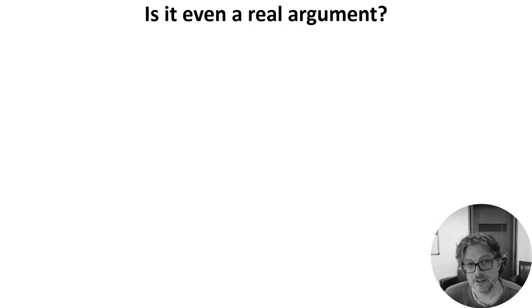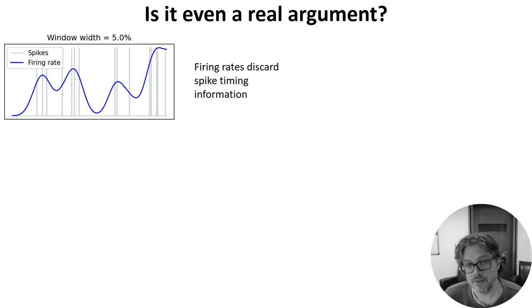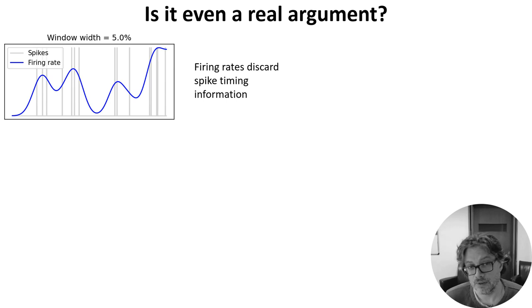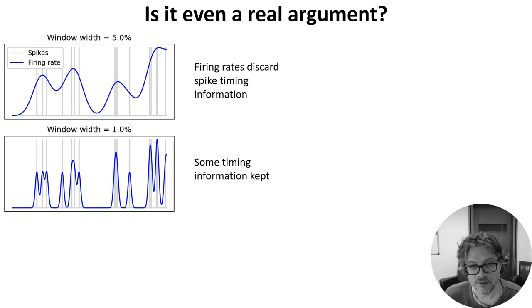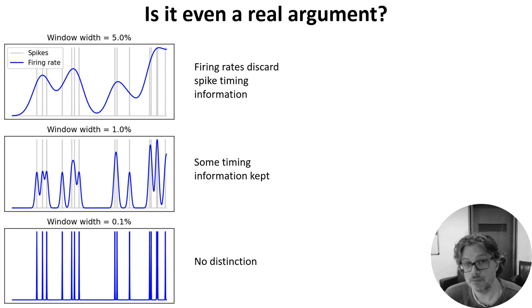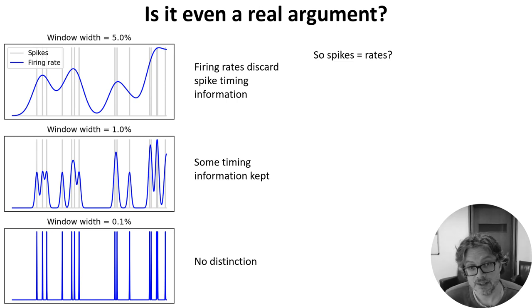Before we get further into the arguments, it's worth asking if the reason we haven't made progress on this issue is that there's no actual issue. If we smooth out spike times as a sort of proxy of firing rate, we can see that it's not capturing the structure of the spike times — this is the picture people usually have in mind. But if we use a narrow window, that becomes less obvious until eventually there's no distinction between firing rates and firing times. So does this mean we can just ignore the distinction? Well, not quite.